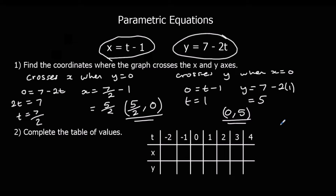If we need to draw a graph of a parametric equation, we complete a table of values with t at the top. For each value of t we put it into both equations and that gives us the coordinates of each point. Substituting negative 2 into the x equation gives negative 2 minus 1, which is negative 3. Putting negative 2 into the y equation gives 7 minus 2 times negative 2, so 7 plus 4, which is 11. So when t is minus 2 we get the coordinate (−3, 11).